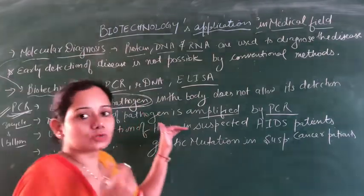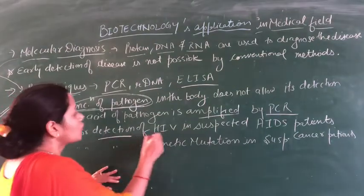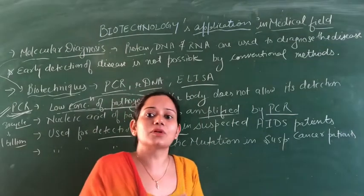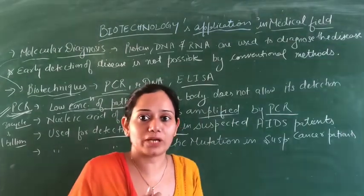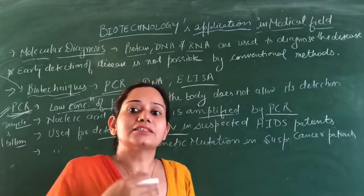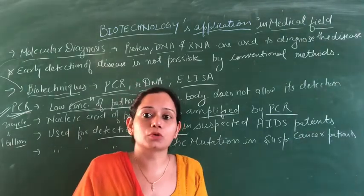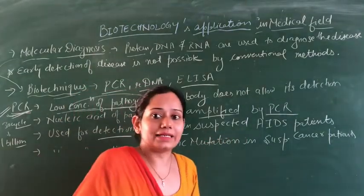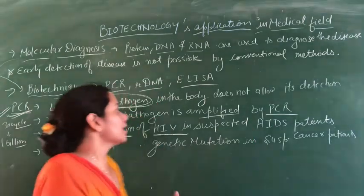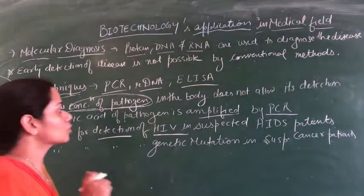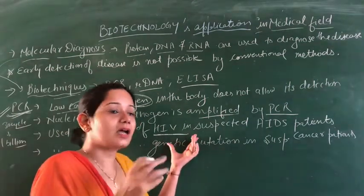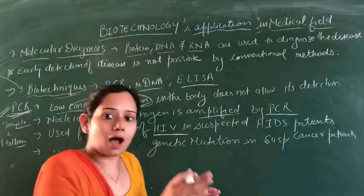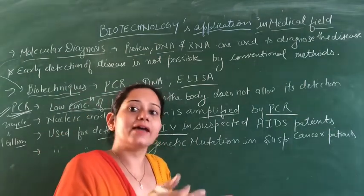This PCR method is used for the detection of HIV in suspected AIDS patients, because AIDS symptoms are often not visible early. But if someone is at high risk — such as drug abusers — there is more chance of AIDS. So they are first tested by the PCR method. If there is a pathogen in their body, it will be amplified and can be tested.